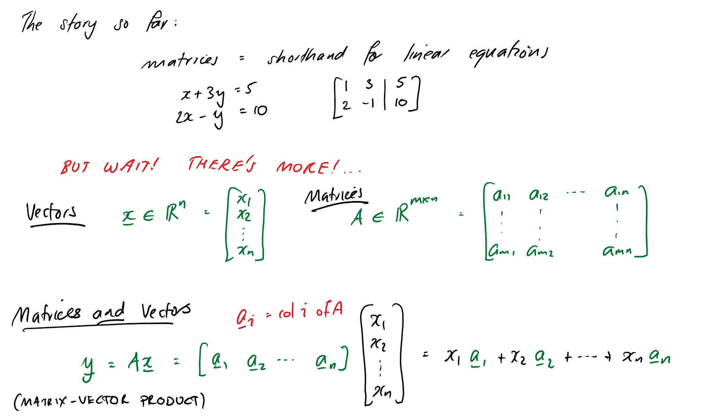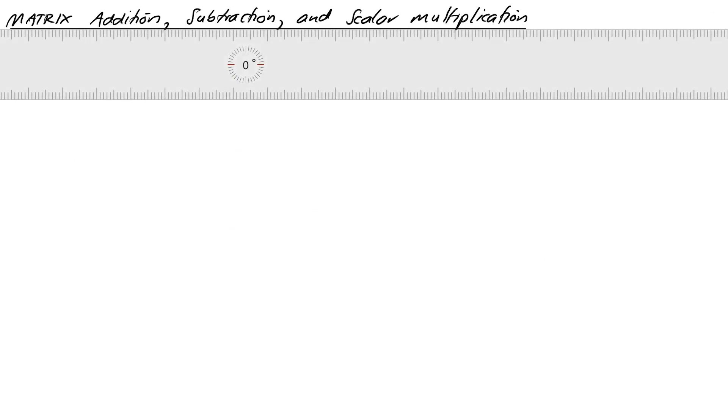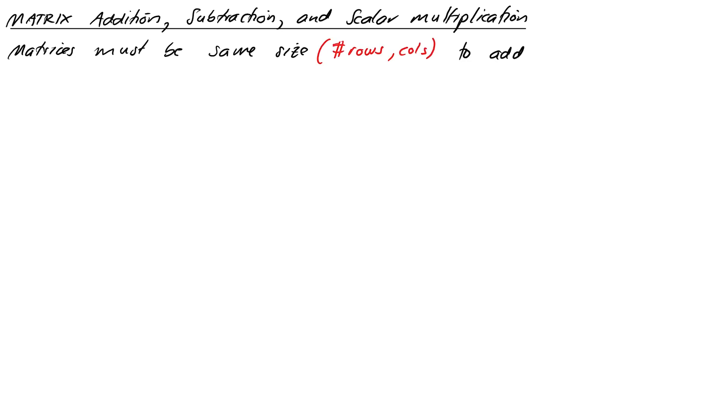Before we study the interaction between matrices and vectors further, we can define matrix addition, subtraction, and scalar multiplication in pretty much the same way as we do for vectors. Matrices must be the same size, and we add or subtract corresponding entries.